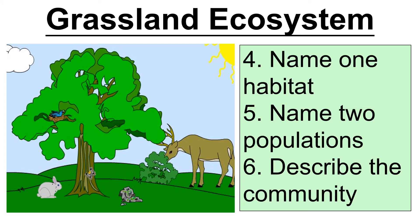Try this one — questions four, five, and six. The habitat here could be woodland, the grass as a habitat for insects, the tree, or the bush. Two populations: you could have deer, lichen or moss, rabbit, butterfly, birds, or the tree. Then describe the community: the community is a mixture of plants and animals including rabbit, butterfly, the bush, the trees, the grass, and so on.